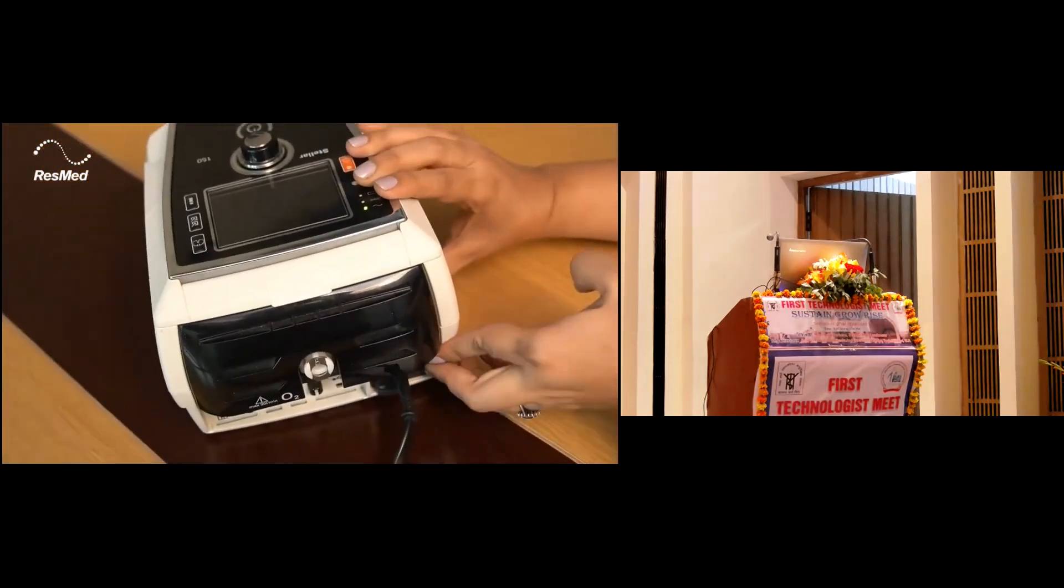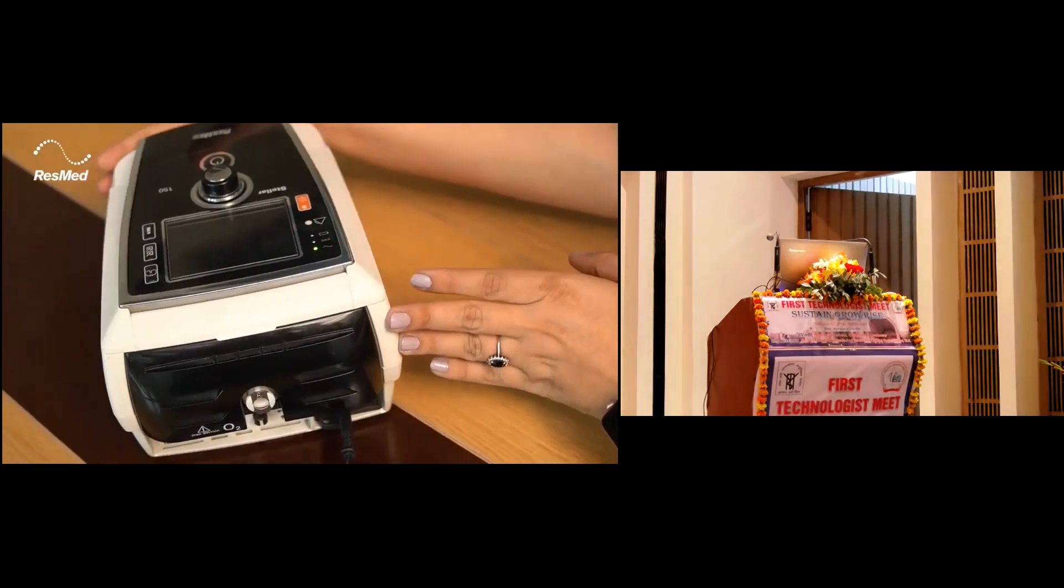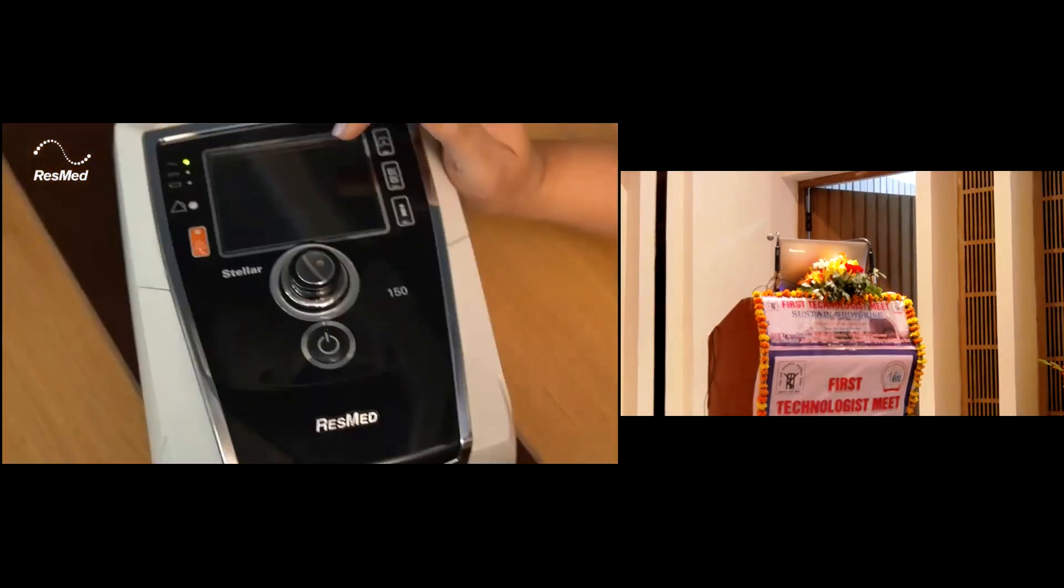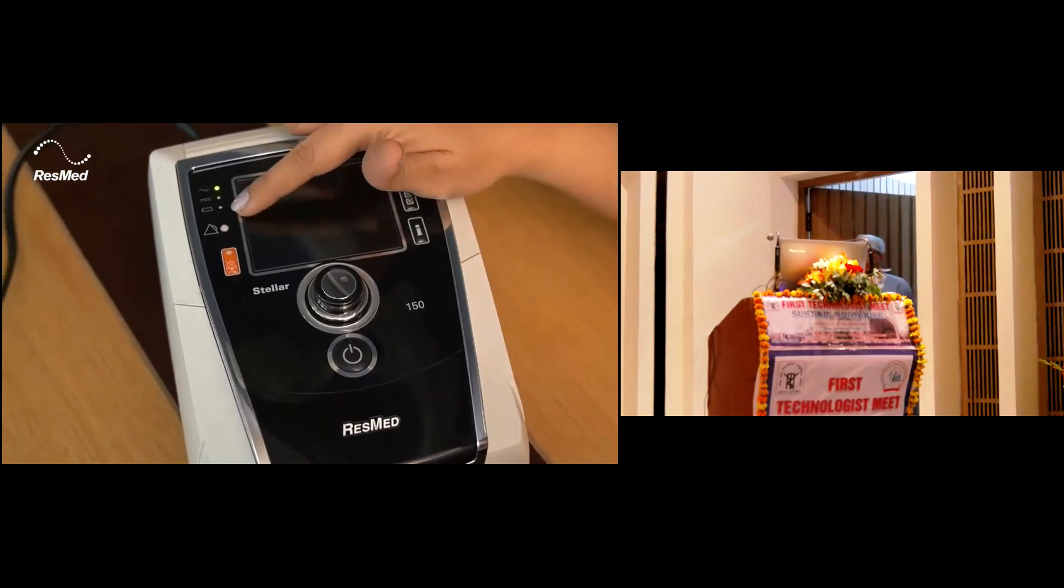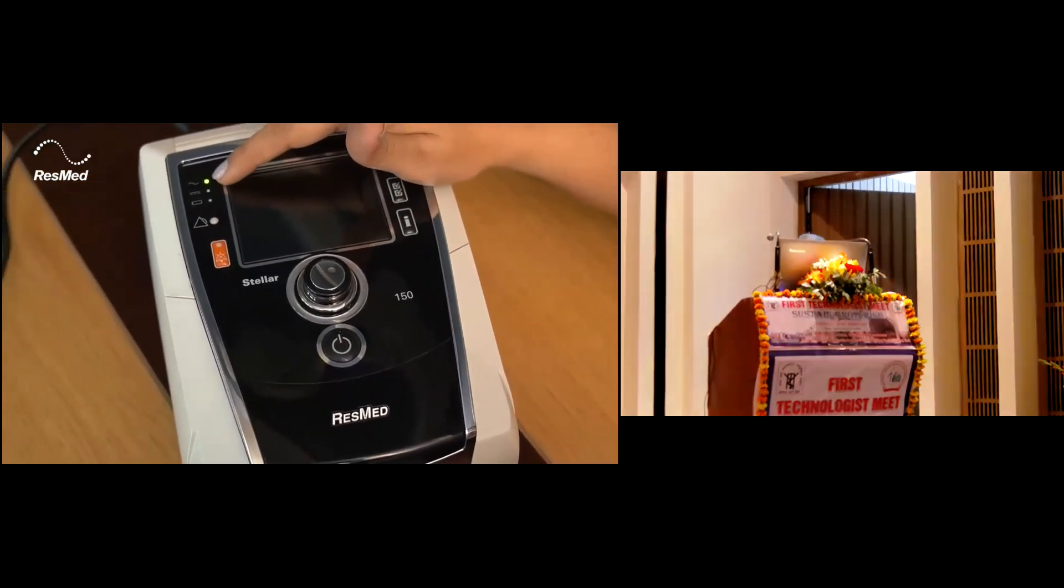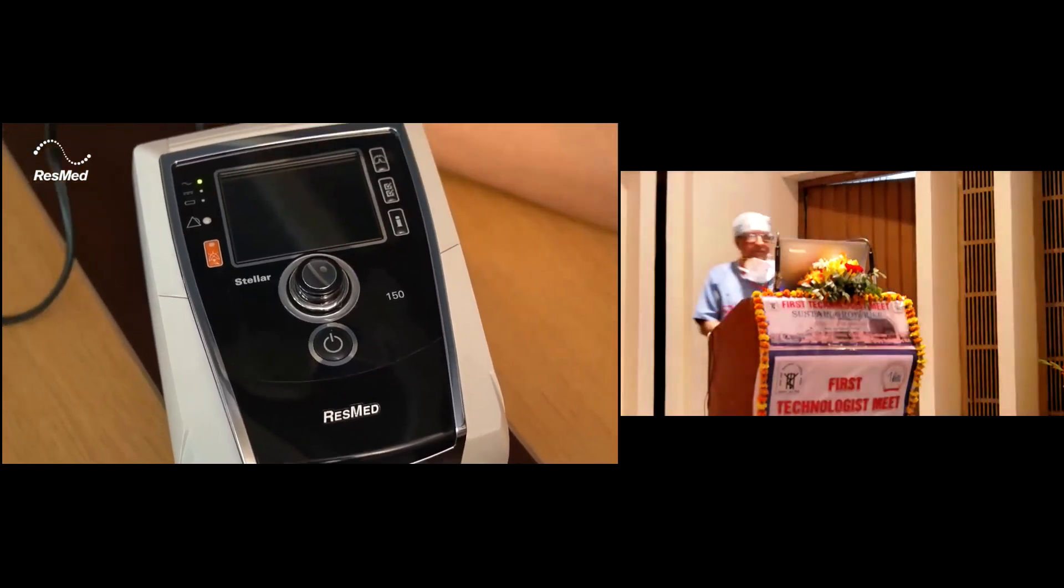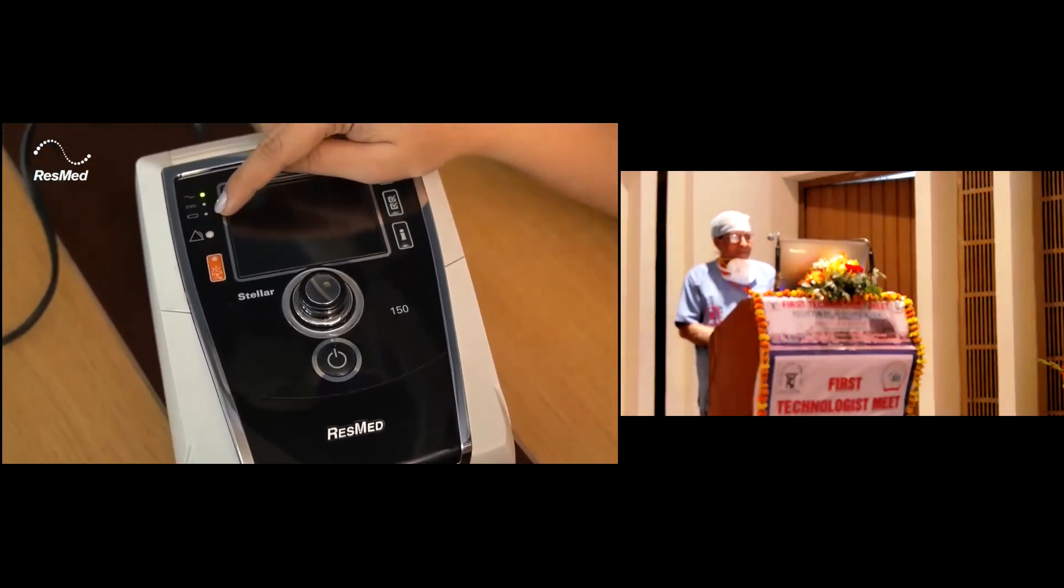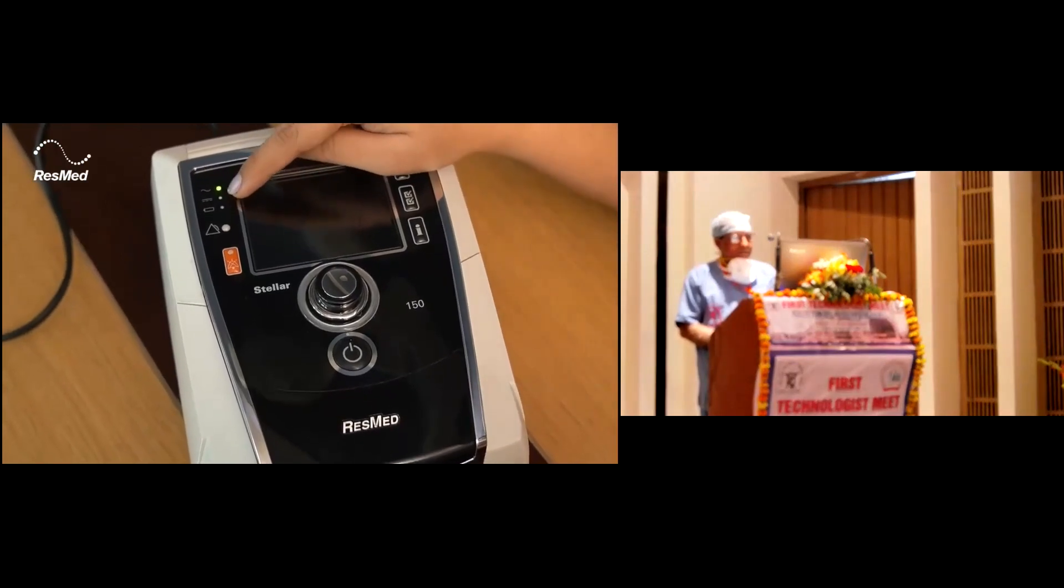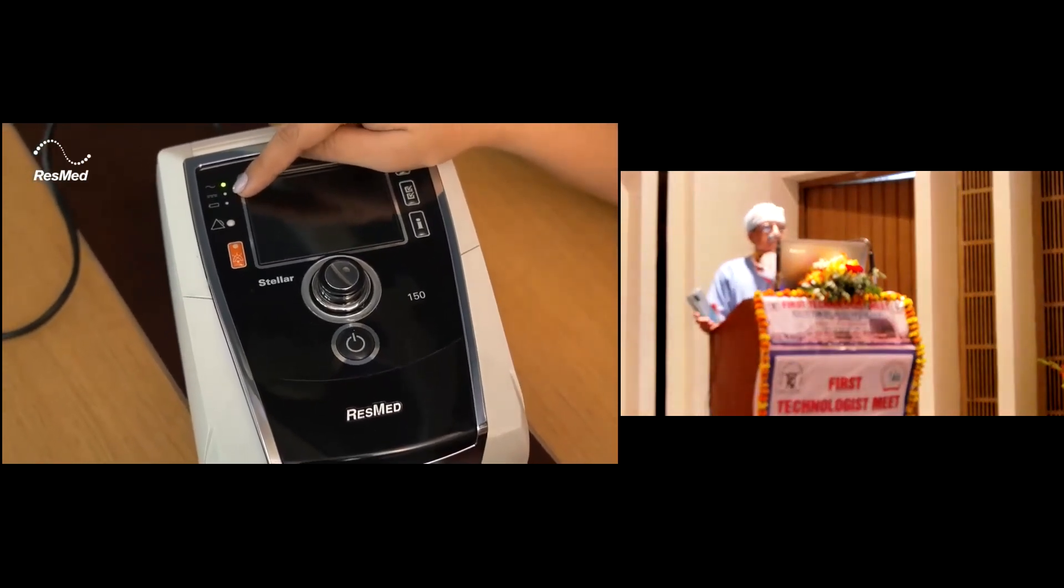Now we'll go to the front of the Stellar. Coming to the face of the Stellar, we have the display over here and the power source indicator. This is the alternating current indicator. Now that the Stellar is charging, we can see the AC indicator is shown. If it was running on battery, this would be lit, or if running on direct current, this would be lit.